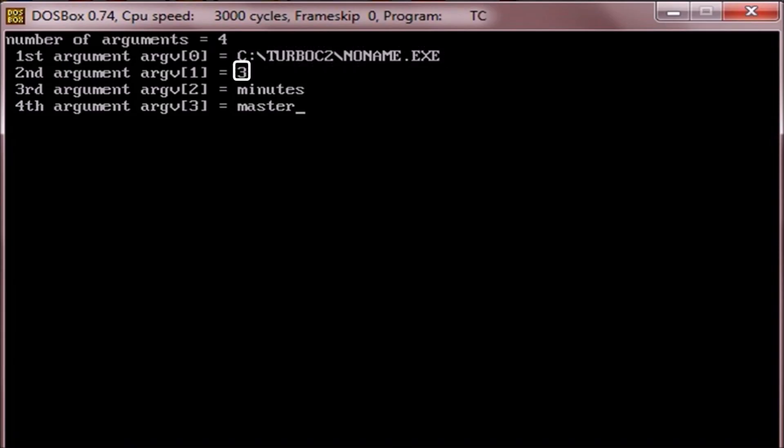You can observe number of arguments as 4. The first argument argv of 0, the program name. argv of 1 as 3, argv of 2 as minutes, and then argv of 3 as master.